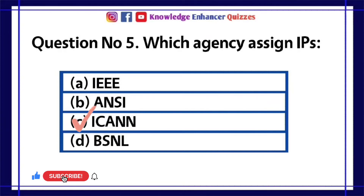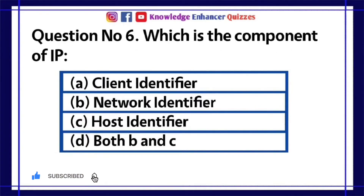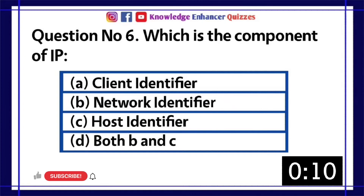Option C is the right answer. Question number 6: Which is the component of IP? A. Client identifier. B. Network identifier. C. Host identifier. D. Both B and C.